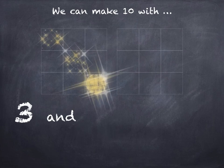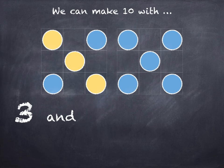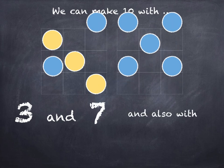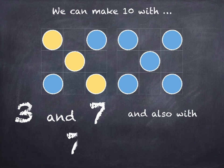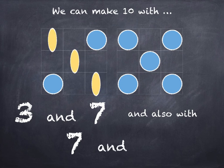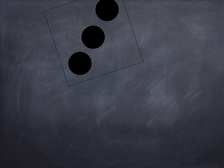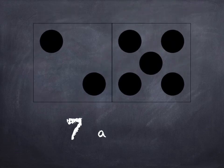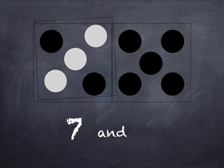We can make ten with three and seven and also with seven and three.